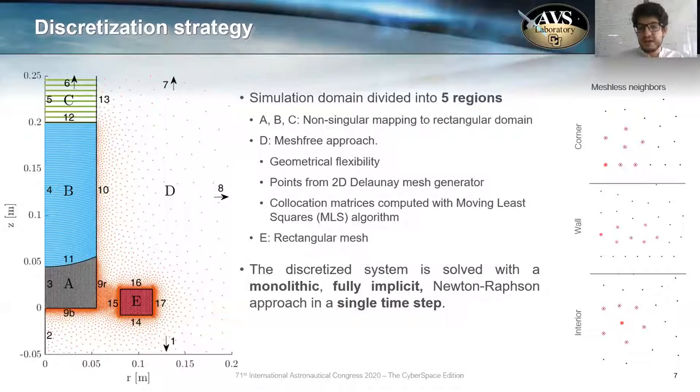We compute or select our points with a two-dimensional Delaunay mesh generator. And we compute the collocation matrices of our system with a moving least squares algorithm. One interesting thing here is that in order to select the neighbors of each node for the mesh-free approach, we adopt a different strategy depending on where the node is located.